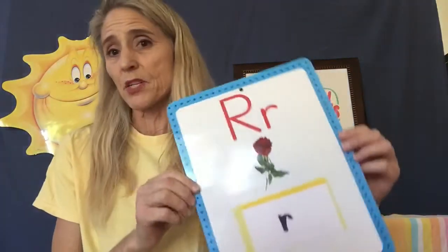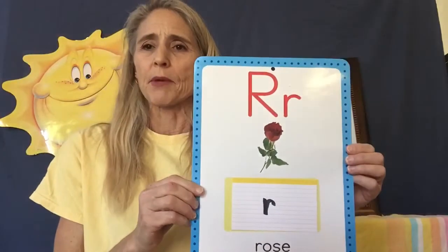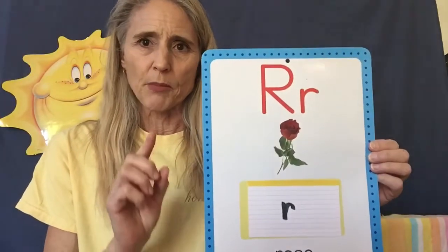Today one of your assignment pages is you're working on the rose card. You're going to figure out which objects begin with the 'rrr' sound and which do not. But the ones that do not — I still want you to write down the beginning sound for those objects. We're going to be talking about the 'rrr' sound.